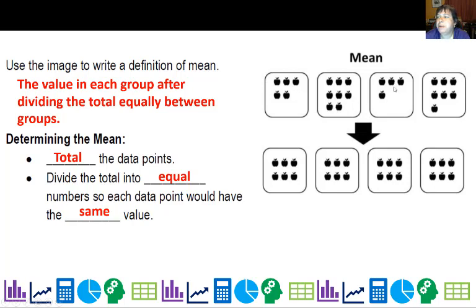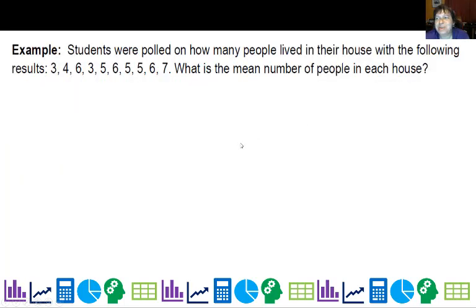Students were polled on how many people lived in their house with the following results: 3, 4, 6, 3, 5, 6, 5, 5, 6, 7. I've got a seven and I've got a three, so I know those aren't the average. I'm going to rearrange a little. I'll take two off the seven, make that a five, and put them over here to make the three a five. I can take one off of that six and put it on the three, take one off of that six and put it on that four. Now that I have equal groups of five, my average is five.